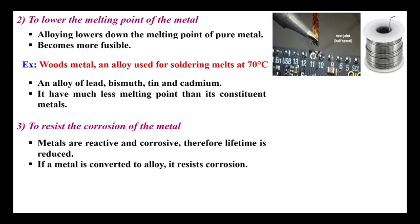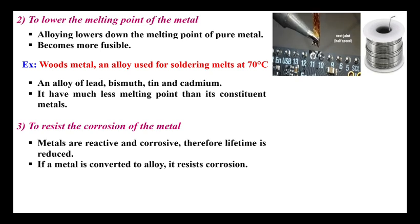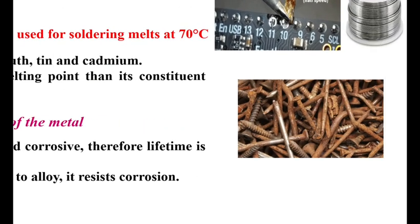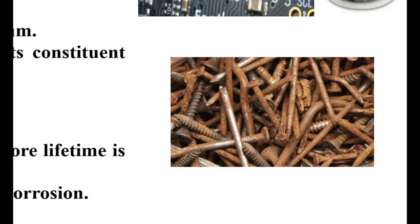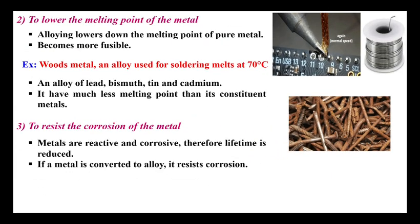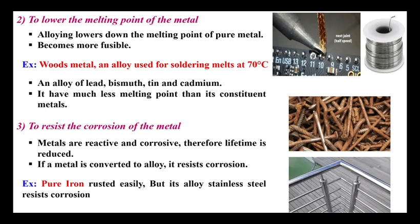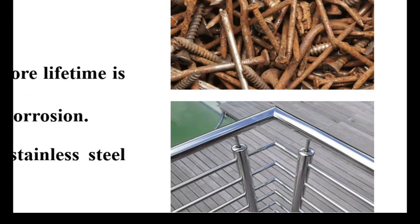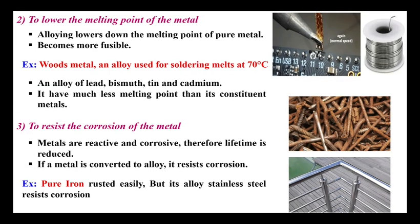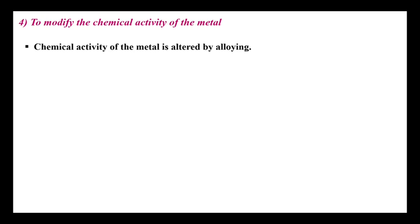The third point is to resist the corrosion of metals. Metals are highly reactive and corrosive, therefore their lifetime is reduced. If a metal is converted into an alloy, it has higher resistance to corrosion so it can be used for many more years. Iron is easily rusted in natural processes due to surrounding moisture and rainfall because of its high reactivity. But its alloy stainless steel resists corrosion, so stainless steel does not corrode as easily and can be used for more applications and construction.